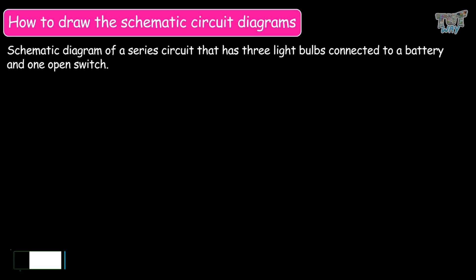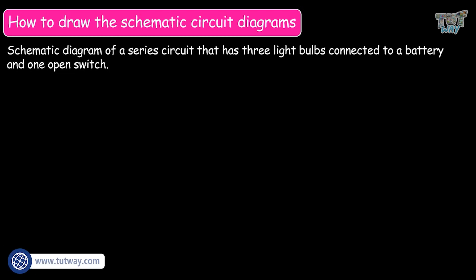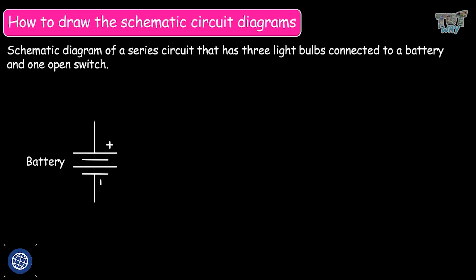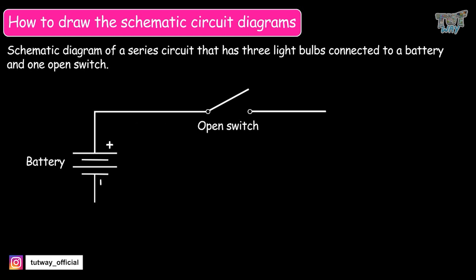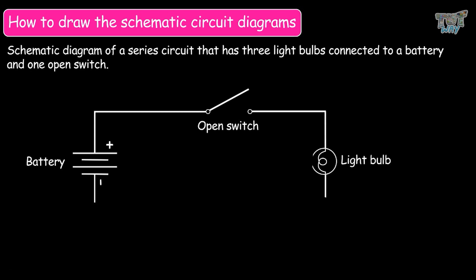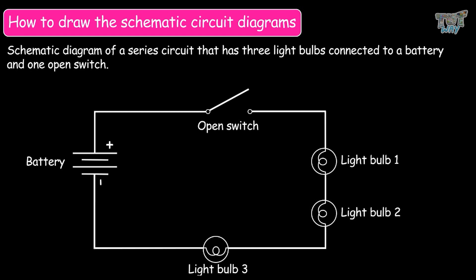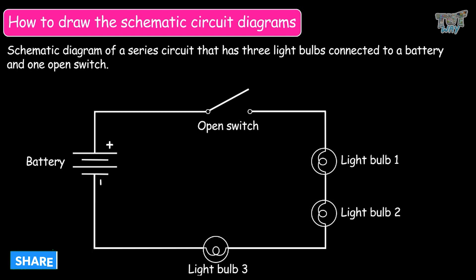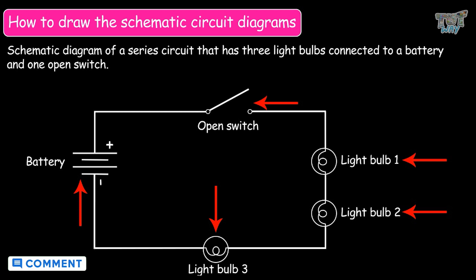Now let's see how to draw a schematic diagram of a series circuit that has three light bulbs connected to a battery and one open switch. First, draw the symbol of a battery, then connect it to the symbol of a switch — here we use the symbol of an open switch. Now connect this to the symbol of three light bulbs joined in series, because we are making a series circuit, and then end this circuit with the symbol of a battery. So we have made a schematic diagram of a series circuit with three light bulbs, a battery, and one open switch.